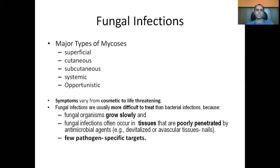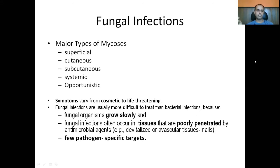There are five major classifications of mycosis: superficial, cutaneous, subcutaneous, systemic, and opportunistic. Symptoms range from cosmetic to life-threatening. Ringworm, for example, causes irritation but is not highly problematic unless it appears on the face, where it gains cosmetic importance. In contrast, toenail infections are often neglected by patients, allowing the infection to worsen significantly.